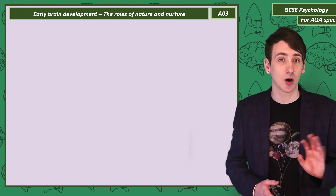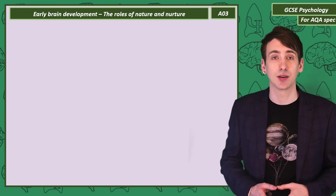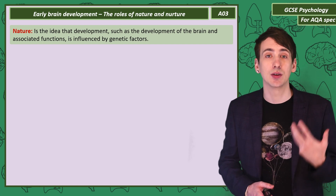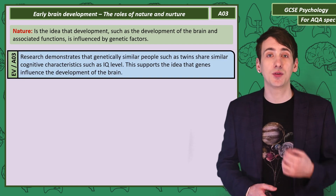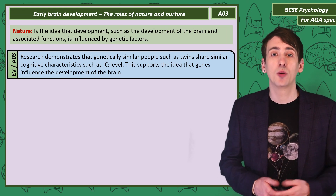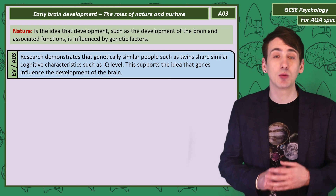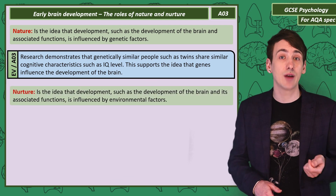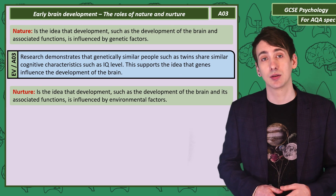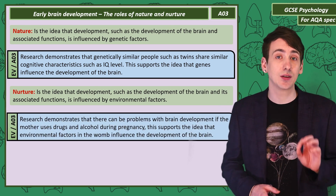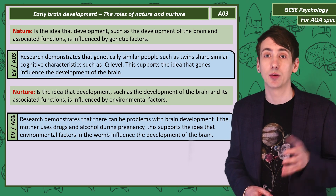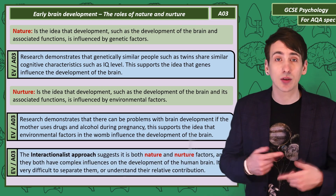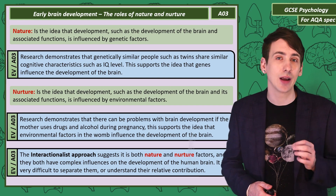Brain development, like most things in psychology, is determined by a combination of nature and nurture factors. Nature is the idea that brain development is influenced by inherited genetic factors. We have evidence that genes can influence aspects of the brain such as intelligence, with research showing that people who share genes — such as twins — have similar IQ levels, suggesting the inheritance of genes that code for brain development. Nurture, on the other hand, suggests that brain development results from an interaction with the environment. Research shows that a fetus's brain can be damaged in the womb if the mother abuses drugs or alcohol while pregnant. But most psychologists take the interactionist approach: that a complex combination of both nurture and nature influences creates the developing brain.